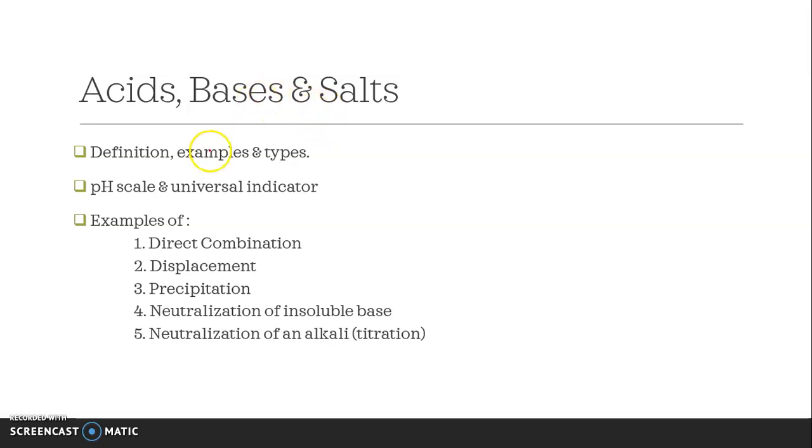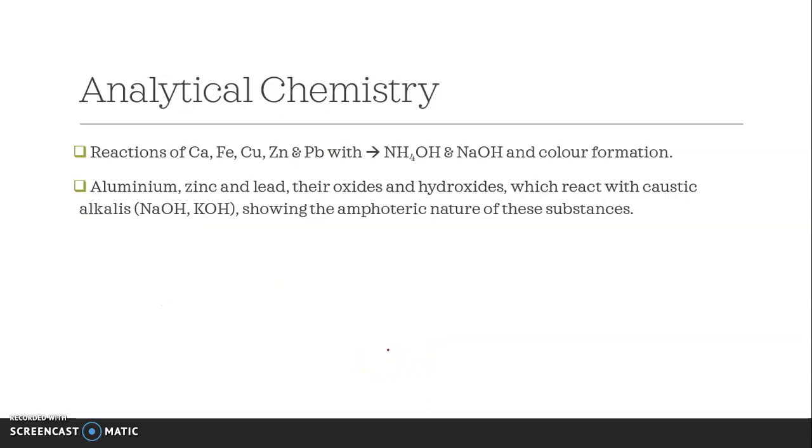Coming to acid, bases and salt. Do definition, examples and types. pH scale and universal indicator. Examples of direct combination, displacement, precipitation, neutralization of insoluble base, neutralization of an alkali that is titration.